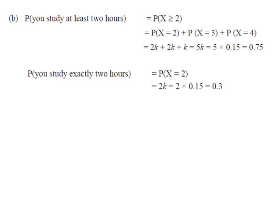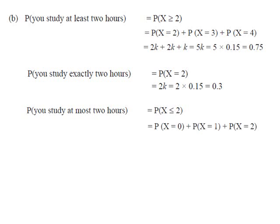Probability that you study exactly 2 hours means P(x=2) = 2k = 2 × 0.15 = 0.3. Probability that you study at most 2 hours equals P(X ≤ 2) = P(x=0) + P(x=1) + P(x=2) = 0.1 + k + 2k = 0.1 + 3k. Putting the value of k and simplifying, we get 0.55.